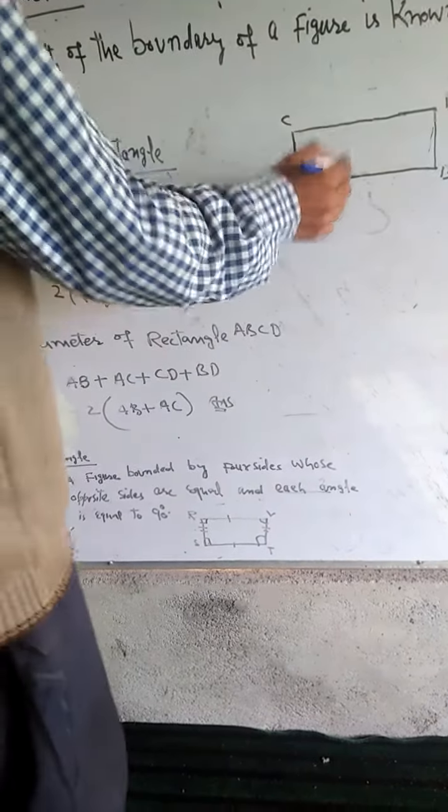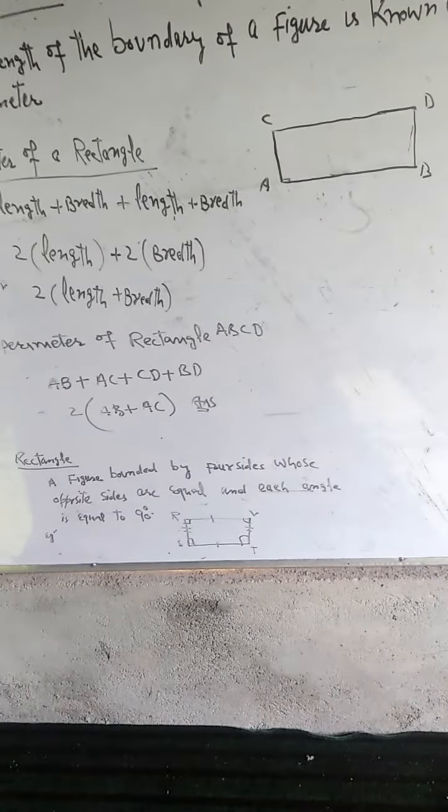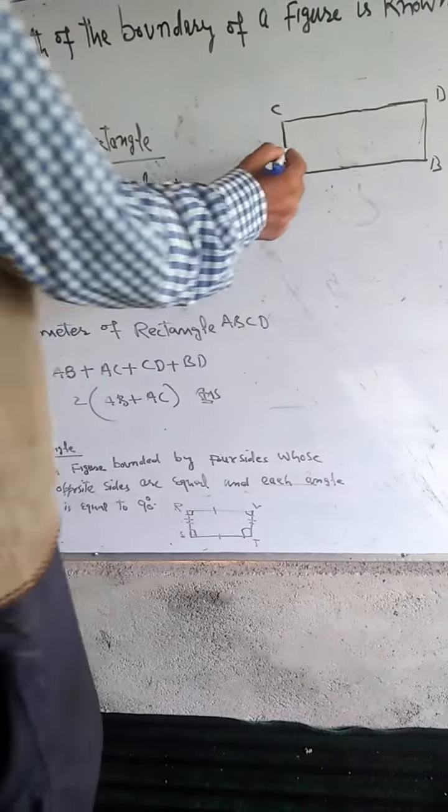Opposite sides are AB and CD, BC and AD. And each angle is equal to 90 degrees.